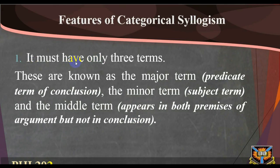Features of Categorical Syllogism: A standard form categorical syllogism has the following features. 1. It must have only three terms. These are known as the major term, the minor term, and the middle term. The major term is the predicate term of the conclusion. The minor term is the subject term of the conclusion. The middle term is that term that appears in both premises of the argument but not in the conclusion.